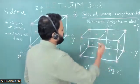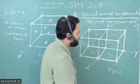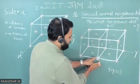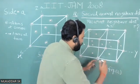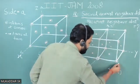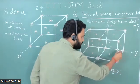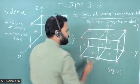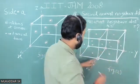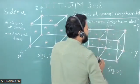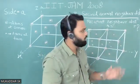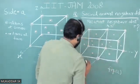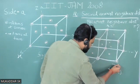We have to find the nearest neighbor distance — that is, the distance between the two spheres which are nearest to each other. Taking this sphere as the reference, the spheres nearest to it are the face-centered ones. I have taken the side length as a, so this distance is a.